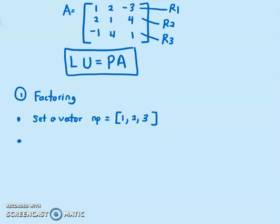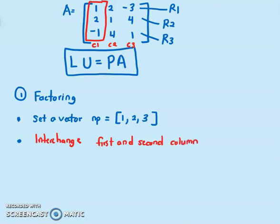Now the second step involved in factoring is to search the first column. Search through the first column C1 for the element with the largest in magnitude. Forget about the negative, largest number. So by inspection, the second row, number 2 here has the larger element. So the first and second column are interchange. We interchange first and second column.